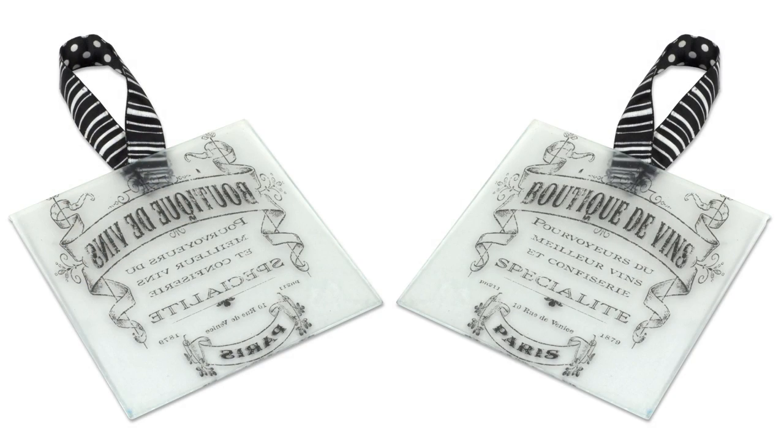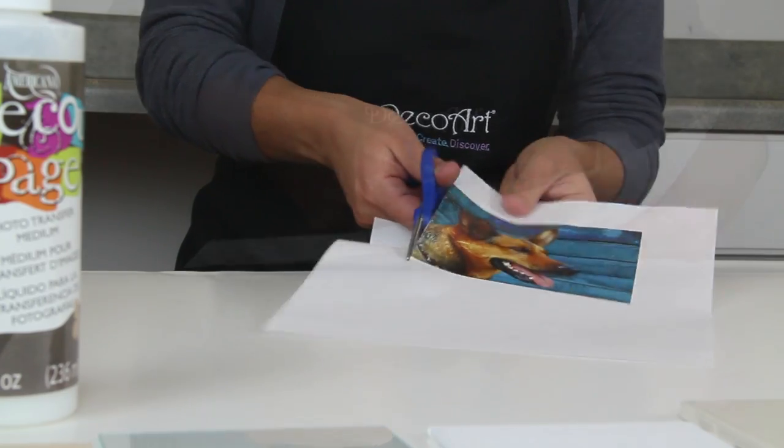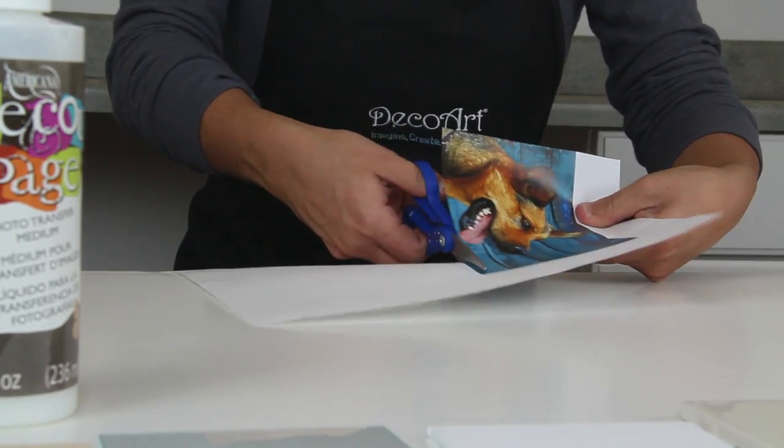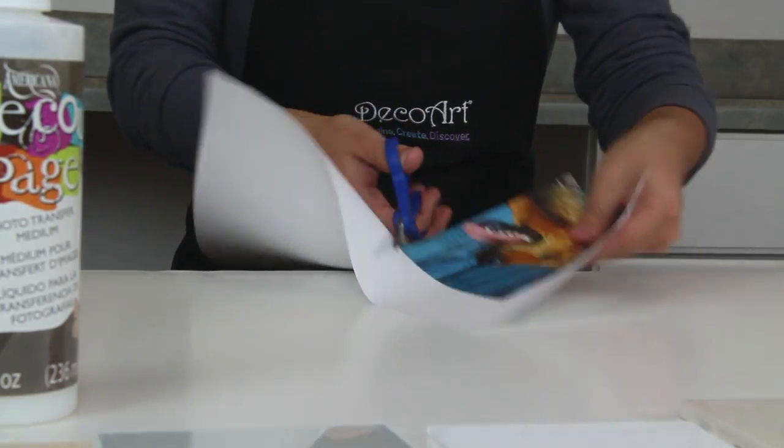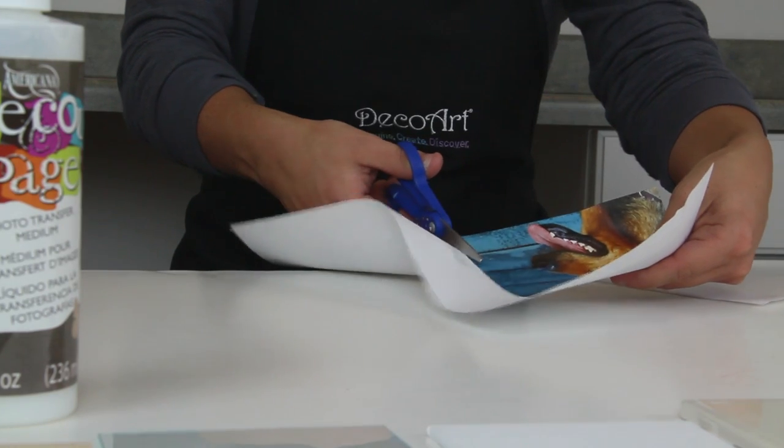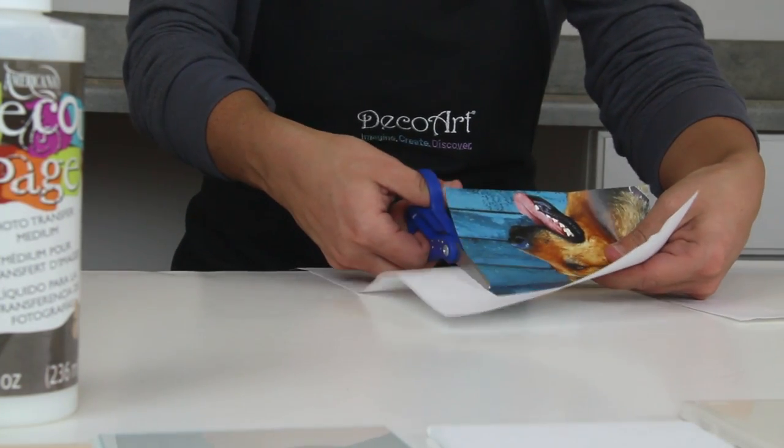Remember to reverse images with letters, words, or numbers to ensure they transfer correctly. Trim your image to the desired size. If you plan to sand the image edges once the transfer is complete, leave a little border around the image. This will allow you to blend the image into the background.